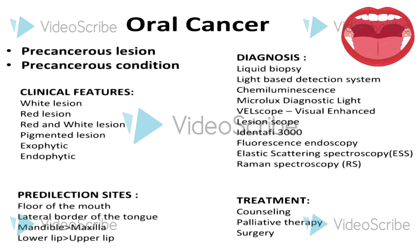In the oral cavity, pre-cancerous lesions and conditions are preceded by squamous cell carcinoma. A pre-cancerous lesion is a morphologically altered tissue in which cancer is more likely to occur than its apparently normal counterpart. Examples include erythroplakia, leukoplakia, and palatal changes in reverse smoking.